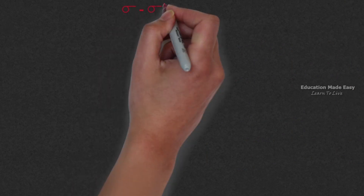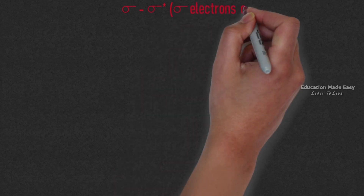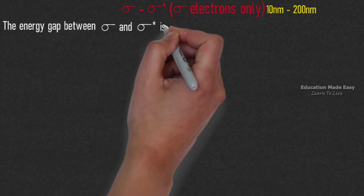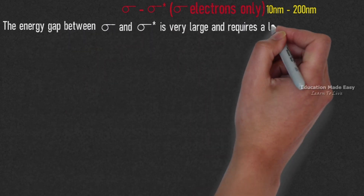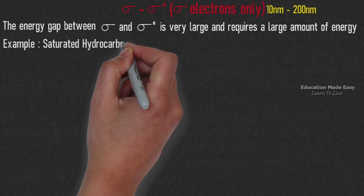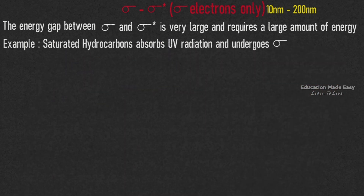The first is sigma to sigma star electronic transition. In this transition, only sigma electrons are involved and it happens in the range of 10nm to 200nm. The energy gap between sigma and sigma star is very large and requires a large amount of energy. For example, saturated hydrocarbons absorb UV radiations and undergo sigma to sigma star transition.